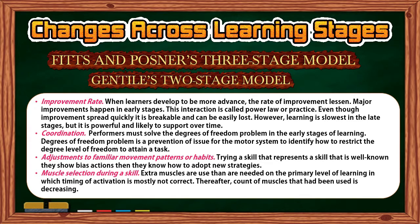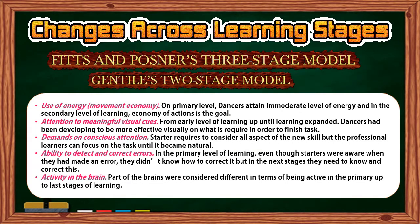Coordination: performers must solve the degrees of freedom problem in early stages of learning, which is the challenge of identifying how to restrict degrees of freedom to attain a task. When trying a skill similar to a well-known one, learners show biased actions before adopting new strategies. Regarding muscle selection, extra muscles are used at primary levels of learning, and timing of activation is mostly not correct; thereafter, the count of muscles used decreases. In terms of energy use and movement economy, dancers use more energy at the primary level, while economy of action is the goal in later stages. Dancers also develop more effective use of visual cues as learning expands. Beginners must consider all aspects of a new skill, while professional learners can focus on the task until it becomes natural.